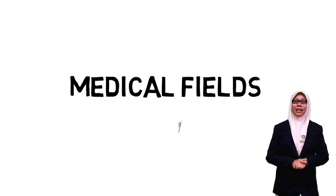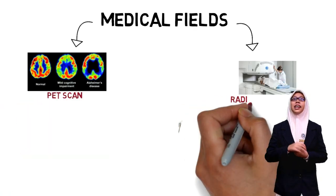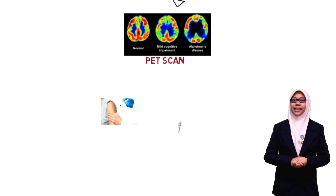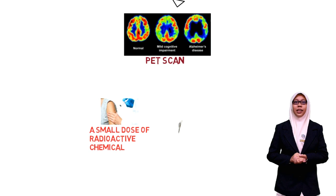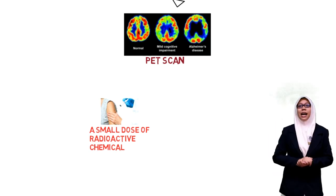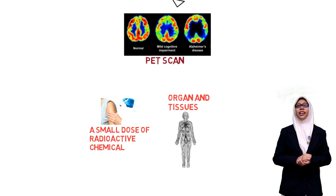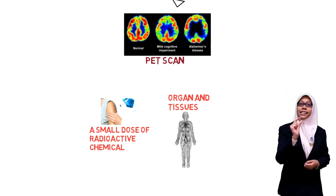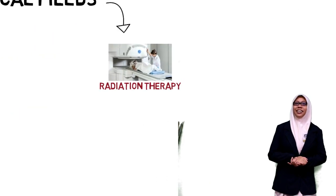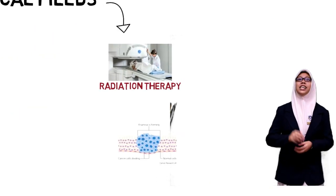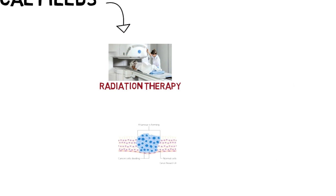Third is the medical field. Nuclear has PET scan and radiation therapy. For PET scan, the test involves injecting a very small dose of a radioactive chemical called a radiotracer into the vein of your arm. The tracer then travels through your body and is absorbed by the organs and tissue being studied. Radiation therapy uses ionizing radiation to kill cancer cells and shrink tumors.